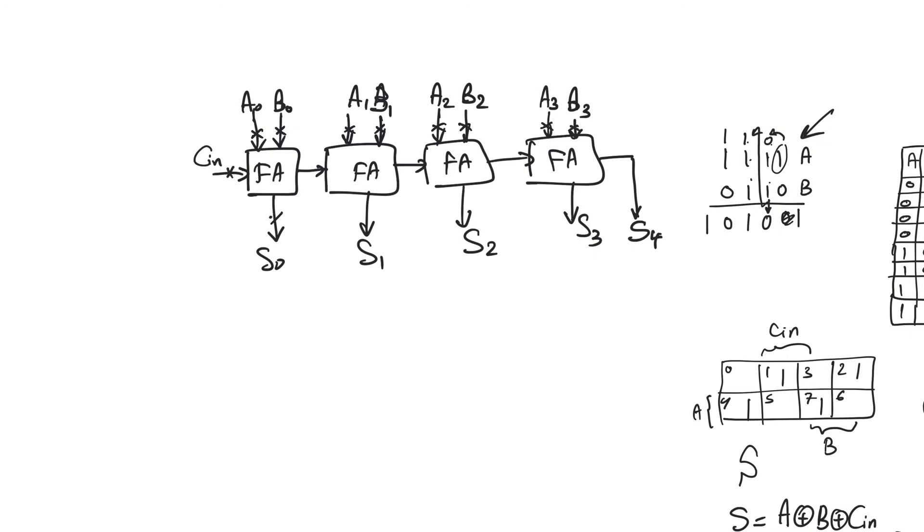And so now the question is, what is the longest path between any two registers on an input and an output? That longest path is going to be the critical path, and it will dominate and define the delay of the circuit. So what's the longest path?